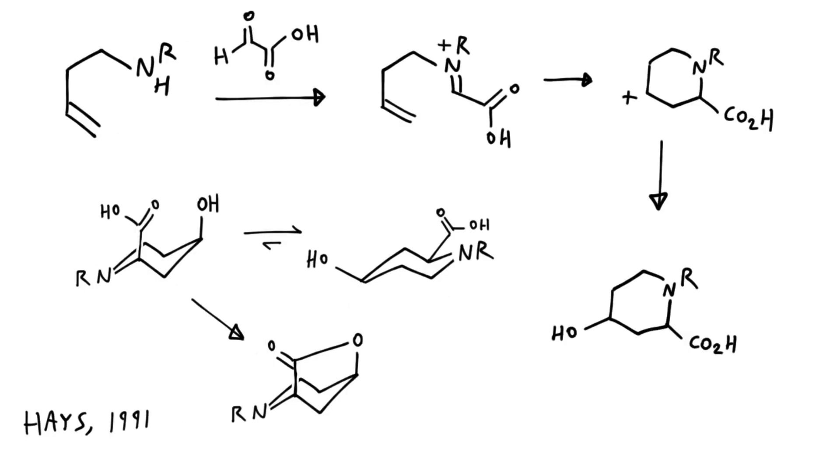Grieco's work was further elaborated on by Hayes and coworkers, and they're now using glyoxylic acid as the aldehyde partner. So like we saw previously, the iminium ion is formed, you get the aza-Prins, you get the cyclization, and then we trap out the 4-hydroxy-piperidine.